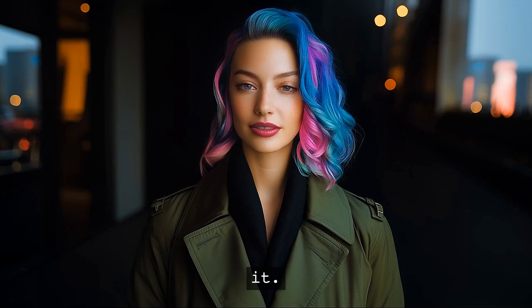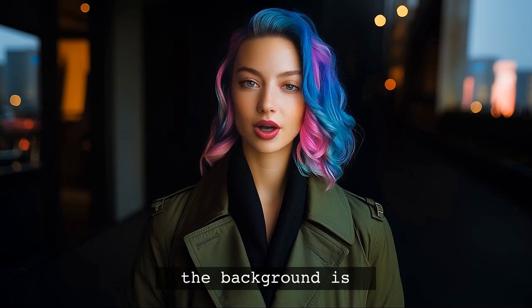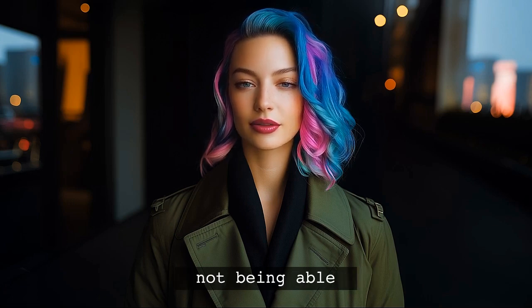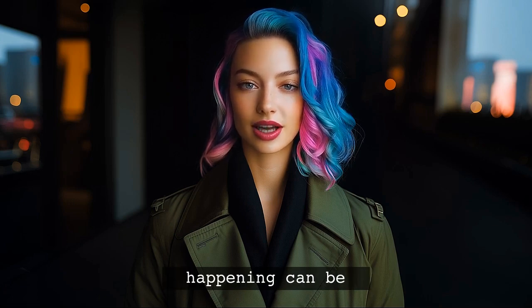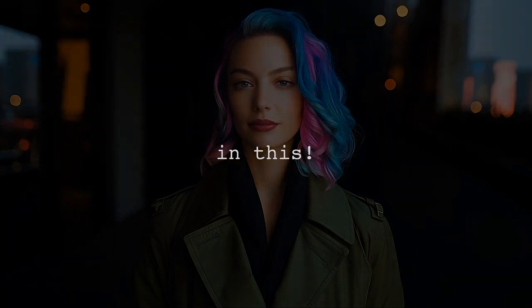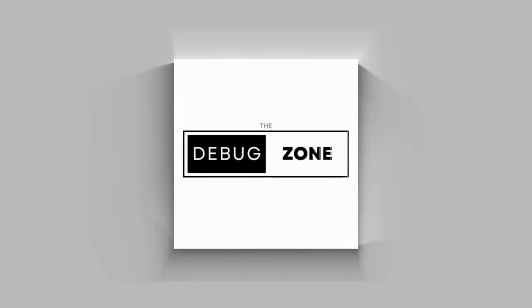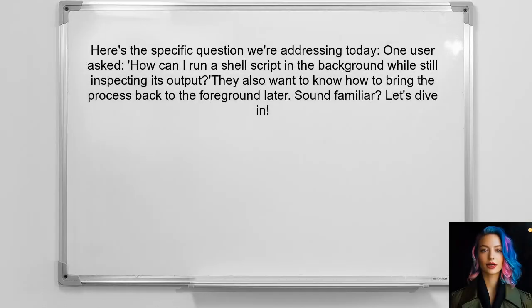Running scripts in the background is a great way to multitask, but not being able to see what's happening can be frustrating. Many users face the same challenge. Here's the specific question we're addressing today: one user asked, how can I run a shell script in the background while still being able to inspect its output by tailing a specific file? They also want to know how to bring the process back to the foreground later.